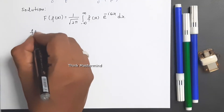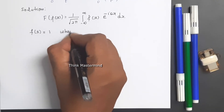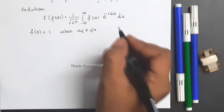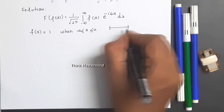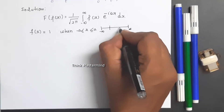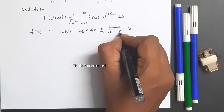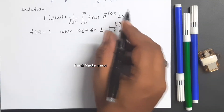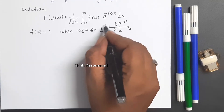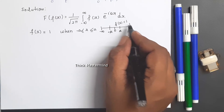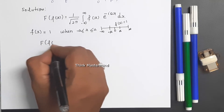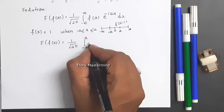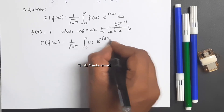Our given function f(x) equals 1 for x in (−a, +a) and 0 otherwise. So the integral from minus infinity to plus infinity reduces to the integral from minus a to plus a of 1 · e^(−isx) dx, since f(x) = 0 outside [−a, a].